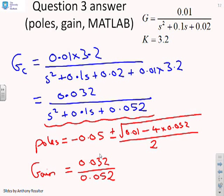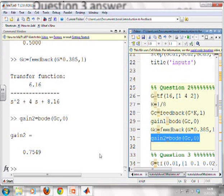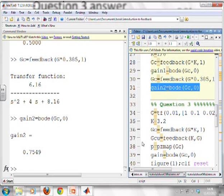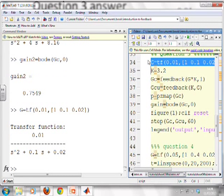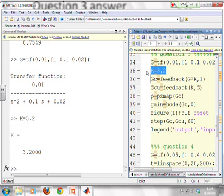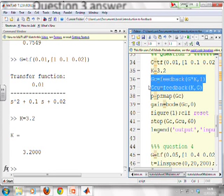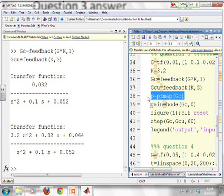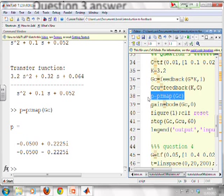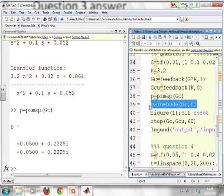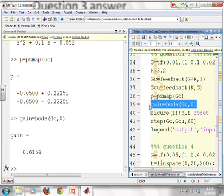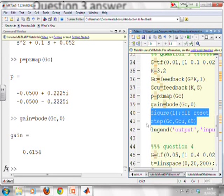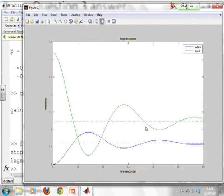So now let's look at MATLAB and see what we get. So if we just scroll down a bit here. That's question 3. So we put in the G. There it is. 0.01 over s squared plus 0.1s plus 0.02. Put in the K. Do the two feedbacks. And you can see the top one. 0.032 over s squared plus 0.1s plus 0.052. I can find the poles. There they are. Minus 0.05 plus or minus 0.2225 j. I can do the steady state gain. 0.6154, which will be what you will have computed.